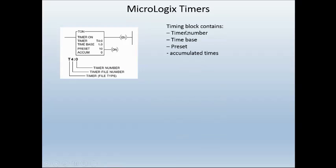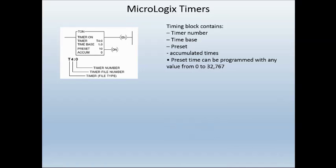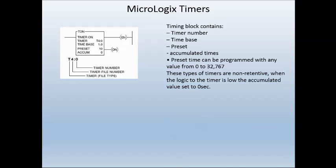Now let's look at our MicroLogix timers — this is true for a lot of the timers in RSLogix 500. This is the instruction here, it's a TON — a timer on. The timing block contains the timer's number, and each timer should have its own number. We have our time base; in this instance it's 1, so that tells me it's counting in seconds. You can change the time base to milliseconds or tenth of a second. We have our preset — that's the value you want your timer to time to — and your accumulated value, which is how much it actually has timed up until that point.